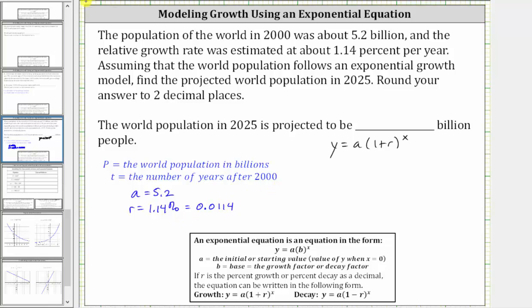And now let's write the equation. The population p in billions is equal to a, which is 5.2 times the quantity one plus r, which is 0.0114 raised to the power of t. Simplifying, we have p equals 5.2 times 1.0114 raised to the power of t.